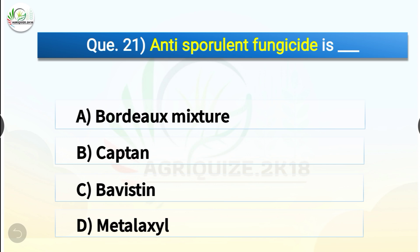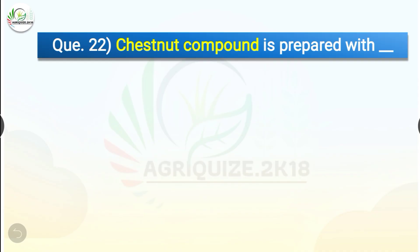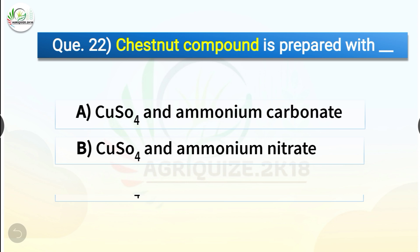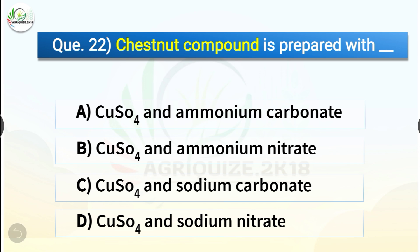Question number twenty-one: Anti-sporulant fungicide is dash. The options are Bordeaux mixture, Captan, Bavistin, or Metalaxyl. The correct answer is option A, Bordeaux mixture. Anti-sporulant fungicide is Bordeaux mixture. Question number twenty-two: Chestnut compound is prepared with dash. The options are CuSO4 and ammonium carbonate, CuSO4 and ammonium nitrate, CuSO4 and sodium carbonate, or CuSO4 and sodium nitrate. The correct answer is option A, CuSO4 and ammonium carbonate.